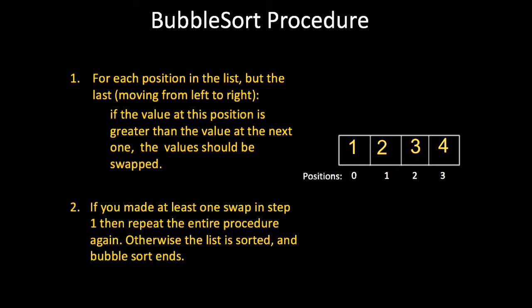Step two notes that if you made at least one swap in step one, then you should repeat the whole procedure starting from step one. However, if you didn't make any swaps, you can be sure that the list is sorted. So, in addition to actually sorting the list, step one also checks to see if the list is sorted. This means that in our example, we would need to go through the whole procedure again in order to verify that the list is sorted, because in step one we made a swap.